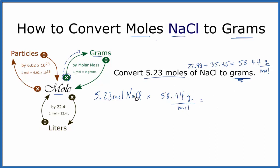And when we do that, multiply the top, divide by the bottom, the moles cancel out and we're left with 305.64 grams of NaCl. So we've converted from moles of NaCl to grams.